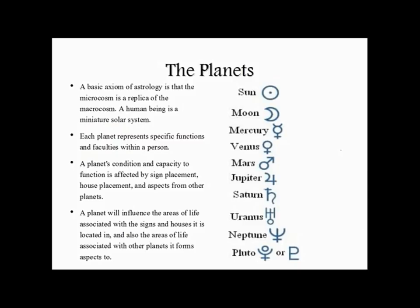A planet's condition and capacity to function is affected by sign placement, house placement, and aspects from other planets. When we consider all the factors that affect a certain planet — its environment by sign, by house, and other influences — it tells us a lot about the way a certain faculty is operating and whether it's able to express itself in an effective way. It's because not everybody was given the same hand that some people find it more natural to express certain character traits than others.